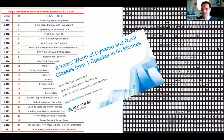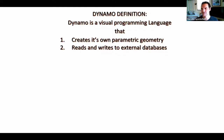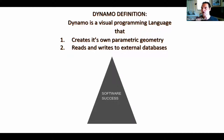What I've learned from all the Dynamo classes I've ever taught is that Dynamo is really simple. If you Google Dynamo, you'll get a lot of different explanations — you'll also get a basketball team. Here is my definition: it's a visual programming language that creates its own parametric geometry and reads and writes to external databases. The external database we normally think of is Revit, but it doesn't have to be — another one is Excel, which is pretty common.